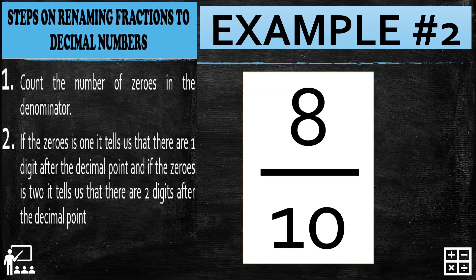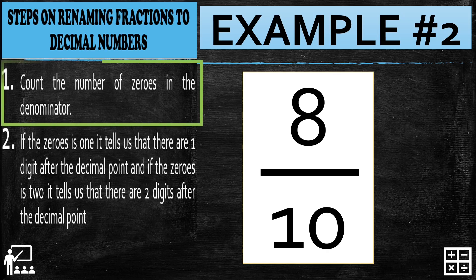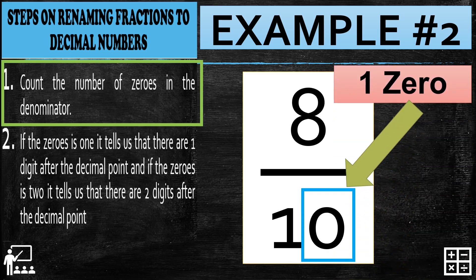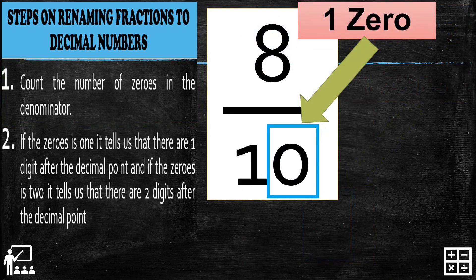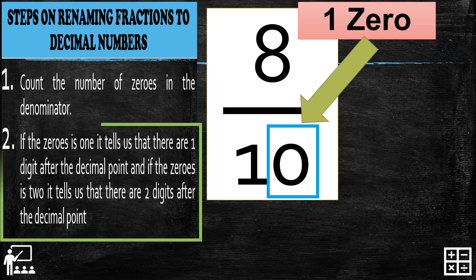Let's proceed to example number 2: 8 over 10. First, count the number of zeros in the denominator. In my denominator, there is one zero in my example.